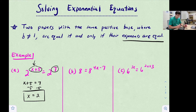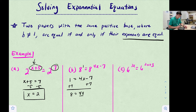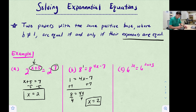Eight doesn't appear to have an exponent, but if no exponent is listed its exponent is one. So we say 1 = 4x − 7. Adding seven to both sides gives 8 = 4x, and dividing by four gives x = 2. Checking: 4(2) = 8, 8 − 7 = 1, so 8^1 = 8^1.